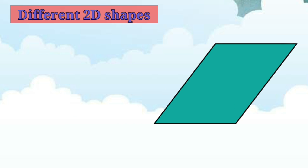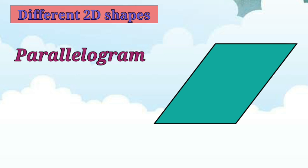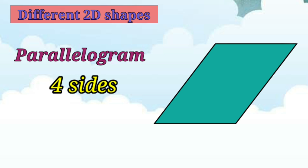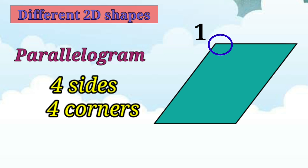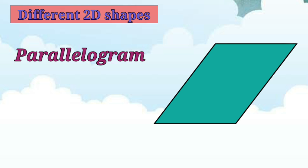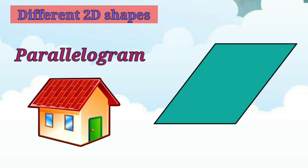Now, children, tell me, what shape is this? It is a parallelogram. In a parallelogram, opposite sides are always parallel to each other and are of equal length. It looks almost like a rectangle, but it has slanting sides. It also has 4 sides — 1, 2, 3, 4 — and 4 corners — 1, 2, 3, 4. An example of a parallelogram is the roof of a house.